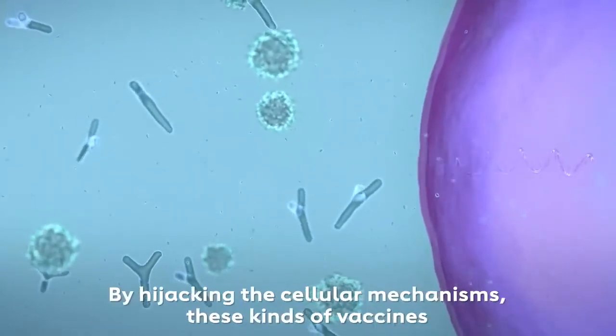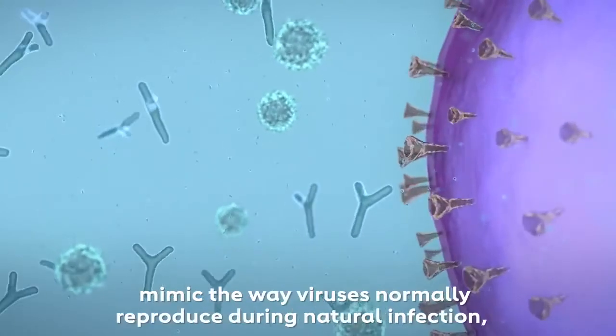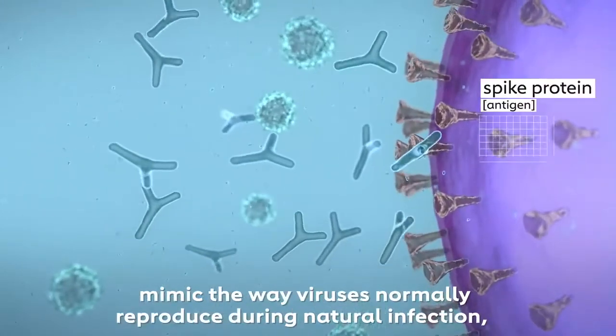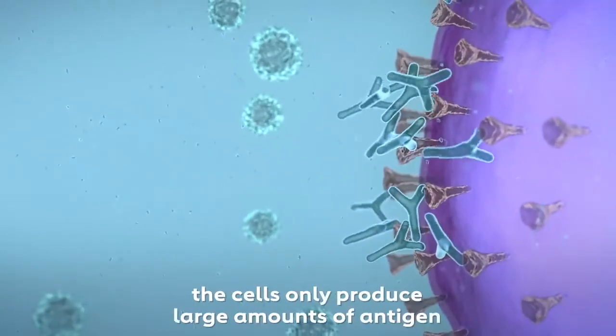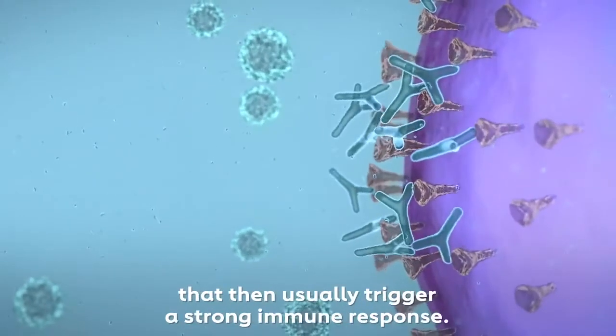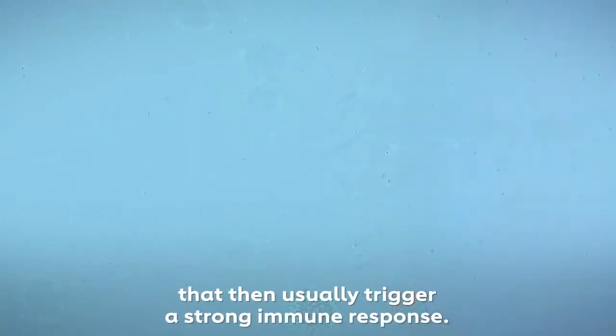By hijacking the cellular mechanisms, these kinds of vaccines mimic the way viruses normally reproduce during natural infection. But rather than creating copies of the virus, the cells only produce large amounts of antigen that then usually trigger a strong immune response.